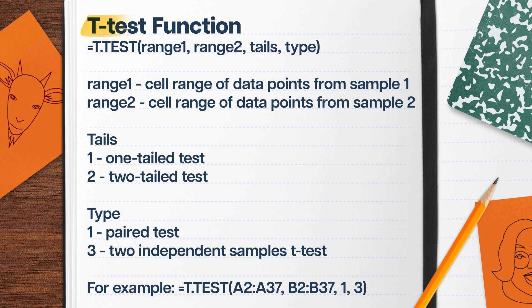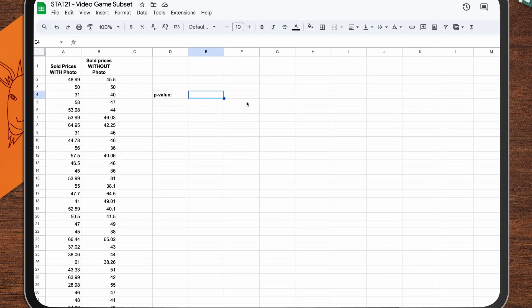I better go get my camera and start taking some sweet shots if I want those games to sell. Everything we just did was pretty time consuming, but the good news is that we can use software to do this automatically. In Google Sheets, for example, if we have each sample in a column of our spreadsheet, we can use the t-test function to calculate the test statistic and p-value for us. We just need to specify that we want a one-sided test, that the two samples are independent, and that we are not assuming equal variance.